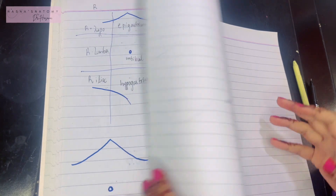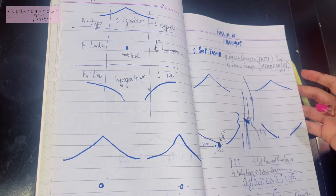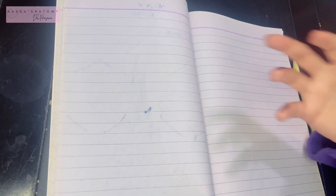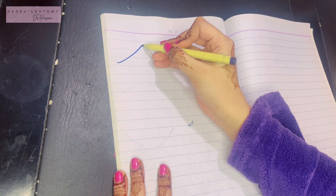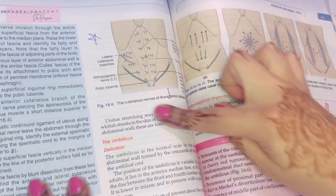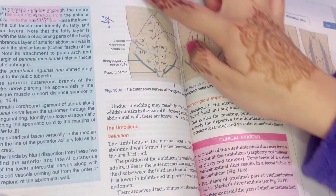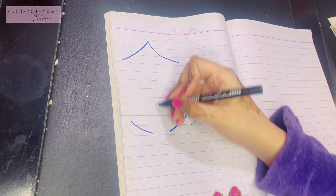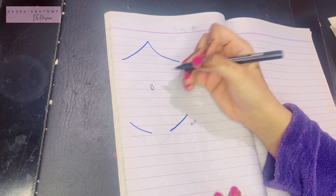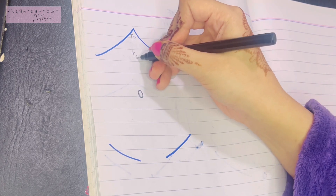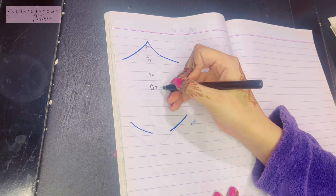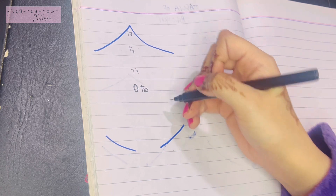Now that we've discussed the fascias and their attachments, we can discuss the contents of the superficial fascia. The superficial fascia contents always include the cutaneous nerves — nerves that supply the skin — and cutaneous vessels. How is the abdominal skin supplied? The nerves supplying the anterior abdominal wall are at these levels: T7, T8, T9 supply the part above the umbilicus, and the nerve supplying the umbilicus is the T10 spinal segment.